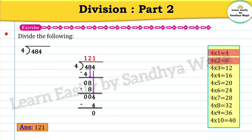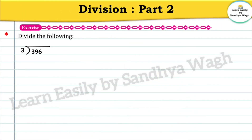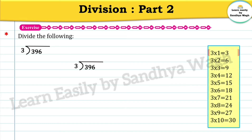Let's take the next example: 396 divided by 3. Here 396 is the dividend and 3 is the divisor. Let us divide the left most digit of the dividend, which is 3. 3 ones are 3, so we will write 3 over here and 1 as the quotient. Let's subtract 3 from 3, answer will be 0. Now let's bring this 9 down.